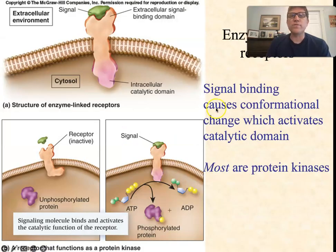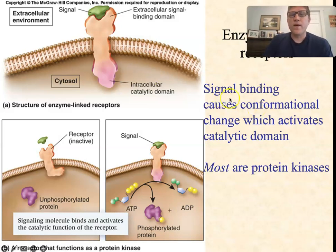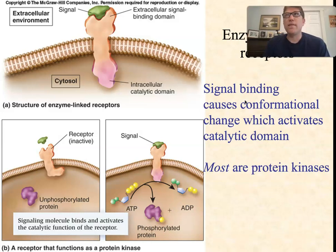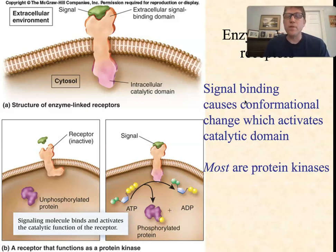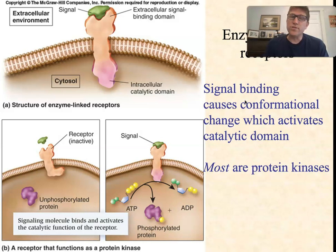Enzyme-linked receptors are most often what we call protein kinases. A kinase is a protein, an enzyme, that phosphorylates something — adds a phosphate group — usually using ATP as its energy source and its source of raw phosphate. A protein kinase is an enzyme that phosphorylates other proteins. By adding a big bulky phosphate group to just the right location, we can change the shape and activate that protein.